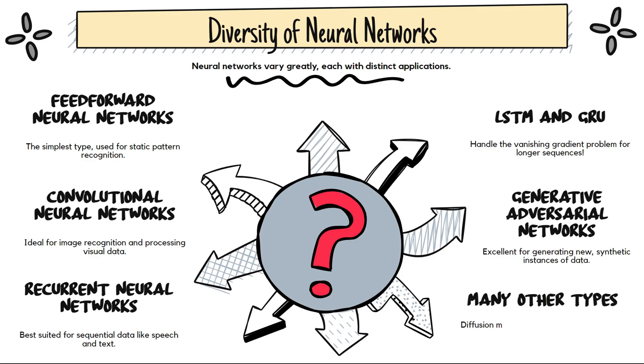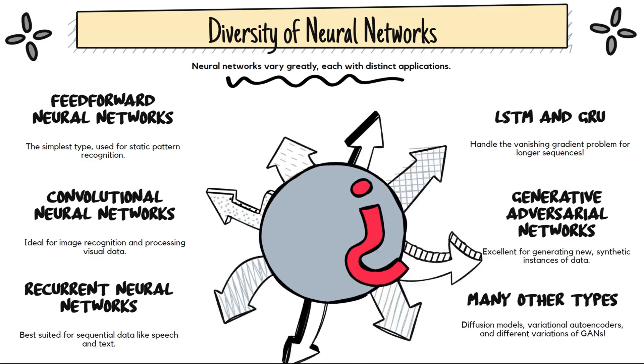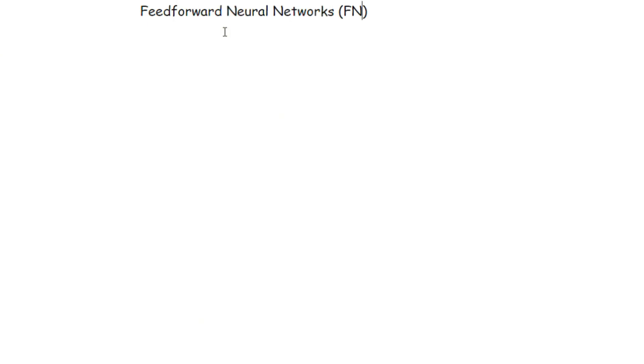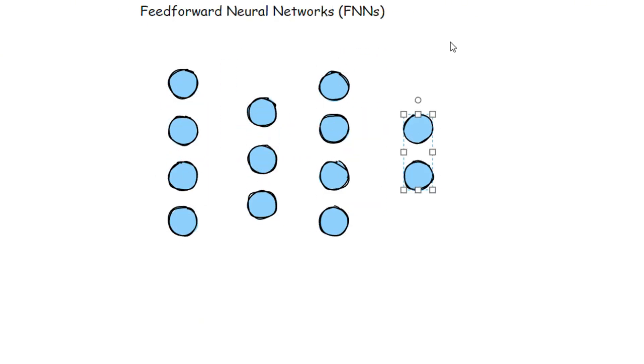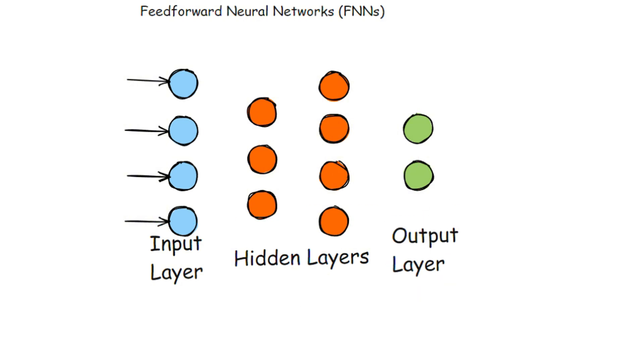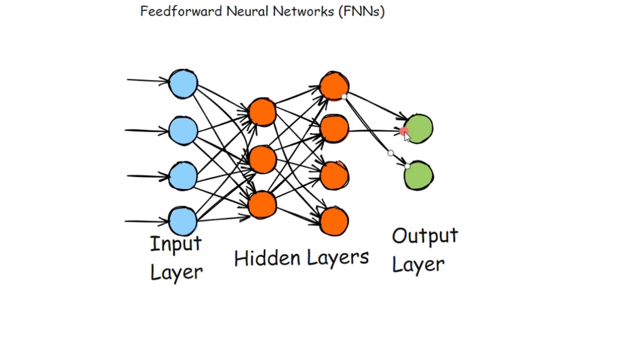Let us start with Feedforward Neural Networks or FNNs. Feedforward neural networks are also known as multi-layer perceptrons or MLPs. FNNs are the simplest type of artificial neural network. In FNNs, the information moves in one direction from the input layer through the hidden layers to the output layer. There are no cycles or loops in the network.